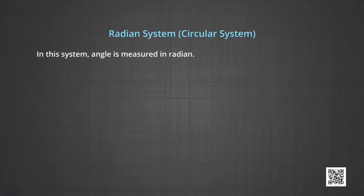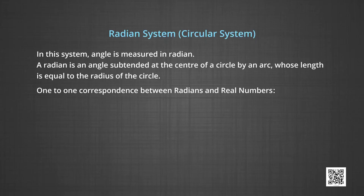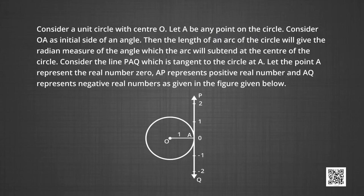Now let us study the radian system, which is also called the circular system. In this system, an angle is measured in radians. A radian is the angle subtended at the centre of a circle by an arc whose length is equal to the radius of the circle. We are going to develop a one-to-one correspondence between radians and real numbers. For this, consider a unit circle with centre O. Let A be the point on the circle. Consider OA as the initial side of an angle; then the length of an arc of the circle will give the radian measure of the angle which the arc subtends at the centre of the circle.